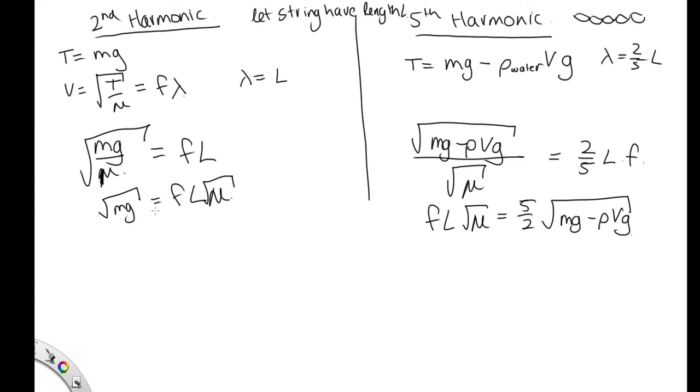So this is equal to this, because they're both equal to fL root mu, which aren't changing. So let's call that 1, let's call that 2. Let's say 1 is equal to 2. So the square root of mg is equal to 5 over 2, root mg minus rho vg.